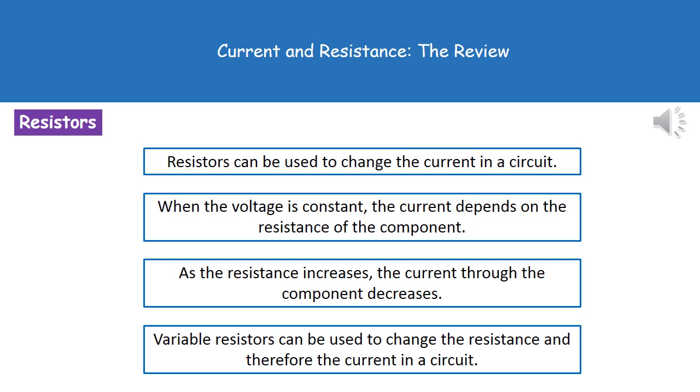You're just increasing the resistance and therefore your light gets dimmer, or you decrease the resistance and your light gets brighter.